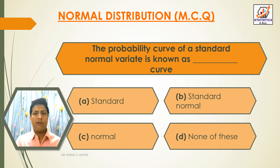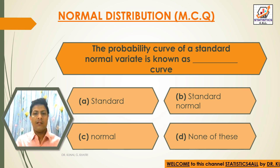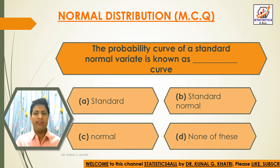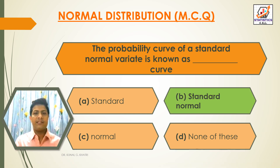Next question: the probability curve of standard normal variable Z is known as dash curve. Option A: Standard. Option B: Standard normal. Option C: Normal. Option D: None of these. The answer is Option B — standard normal curve. The probability curve of Z is known as the standard normal curve.